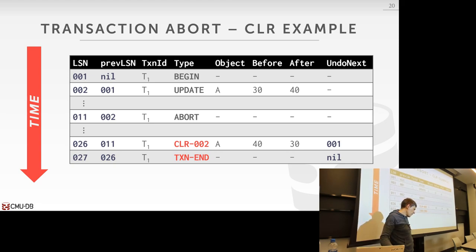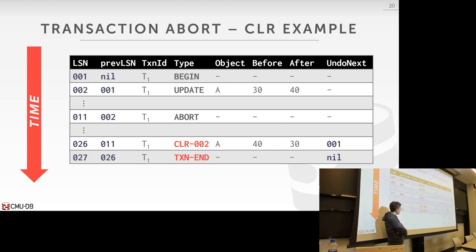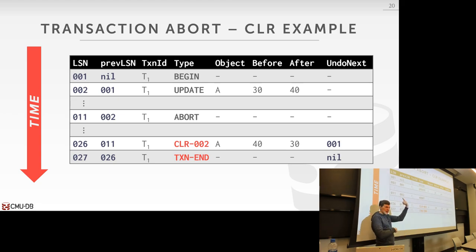If somebody is reading — somebody can't read the value of an aborted transaction, correct. If I try to read the change made from an aborted transaction, I have to reverse them before I'm allowed to read it. Somebody can't read that page unless these compensation log records are applied — written to memory. If it's single version, yes; multi-version, no. That's the beauty of multi-versioning — because now you just have a version that doesn't exist anymore, you can ignore it. In single version, yes, you'd have to reverse these things.